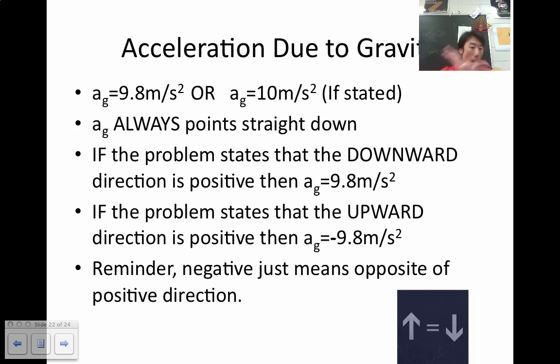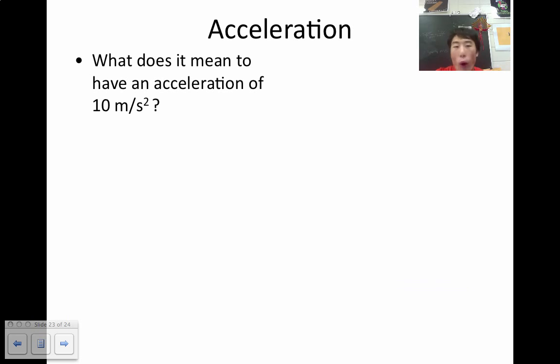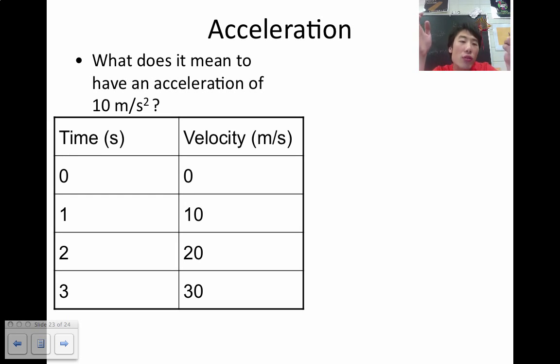What does it exactly mean to have an acceleration of 10 meters per second squared? Stroking the chin and think about it. So, we know that acceleration means that it's a change in velocity over time. So, if we start off at time zero, we have no velocity. Over one second, according to 10 meters per second squared, it will increase to 10. Over two seconds, your velocity now is 20. It increases by 10. Three seconds, it increases by 10 meters per second again. And so, now you're going extremely fast. You're going 30 meters per second. Notice how the object is speeding up from 10 meters per second to 20 meters per second to 30 meters per second.